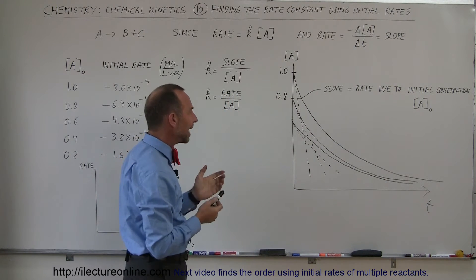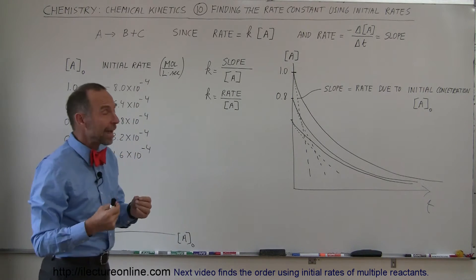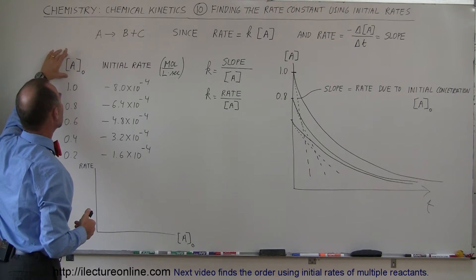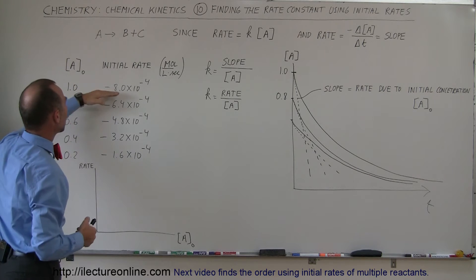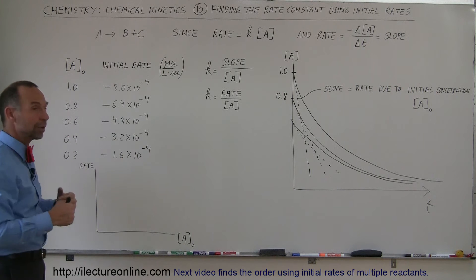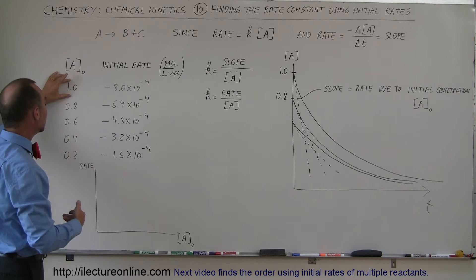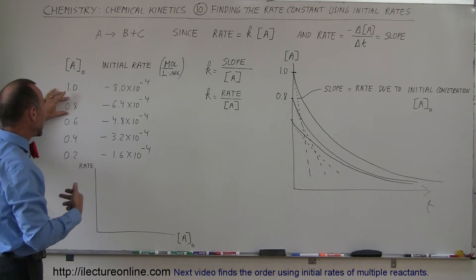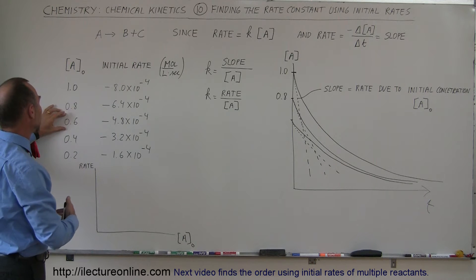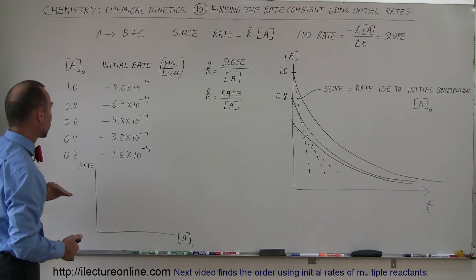The way we find the constant K, which determines how fast the reaction takes place, is as follows. We set up the reaction so that we change our initial concentration of the reactant. We start with a certain concentration and measure the initial rate. Then we change the initial concentration and do the experiment again — instead of starting with 1 mole per liter, we start with 0.8 moles per liter and measure the initial reaction rate. Then we try with a lower concentration of 0.6 moles per liter and again measure the initial reaction rate.